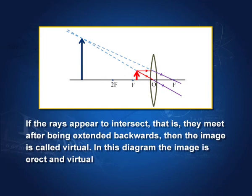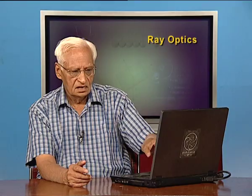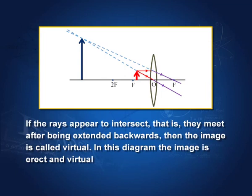When the object is placed between O (optical center) and F (focus) for a convex lens, the two rays from the tip diverge after the lens and do not meet on the far side. Extended backwards, they meet at a point on the same side as the object. Therefore this is a virtual image — it is erect and magnified.